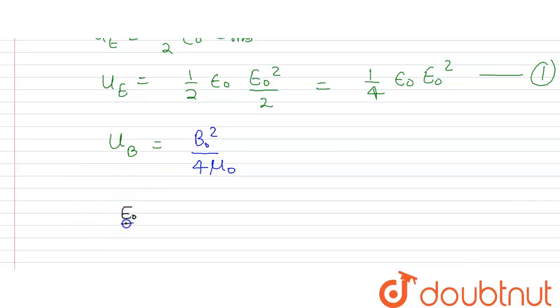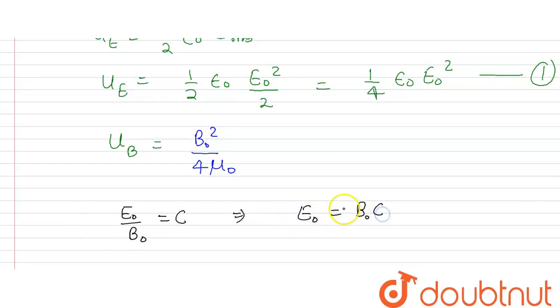Now there is a relation we know: E₀ divided by B₀ equals c, the speed of light. From this we can easily see that E₀ will be equal to B₀ times c. Now put the value of this into equation 1.